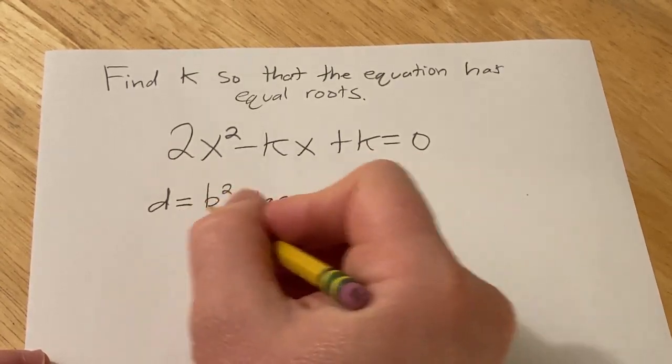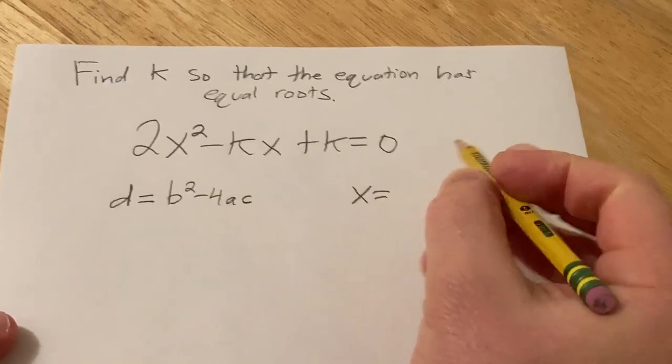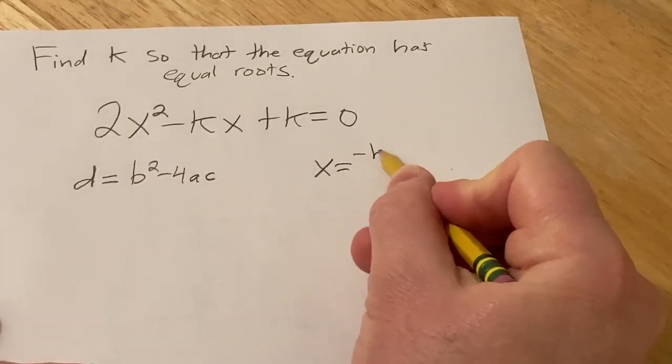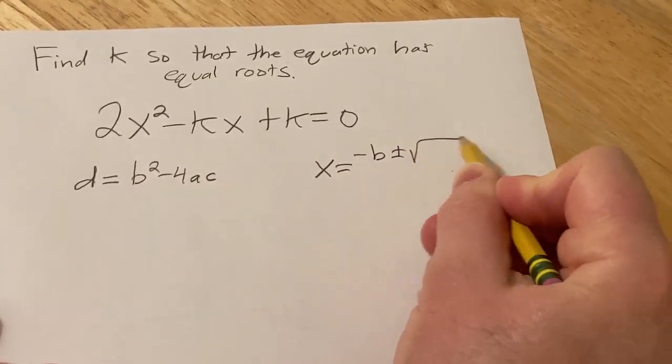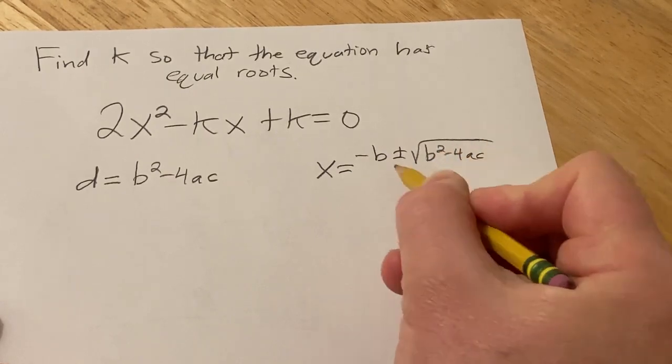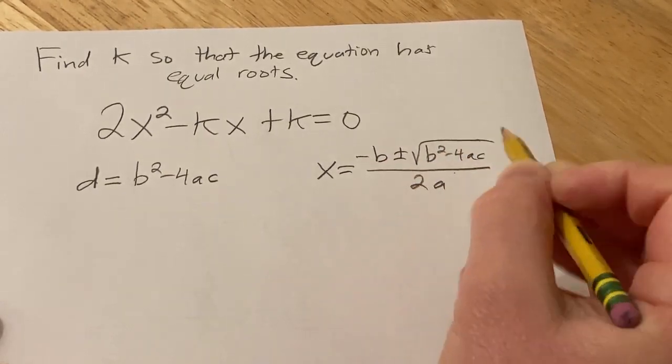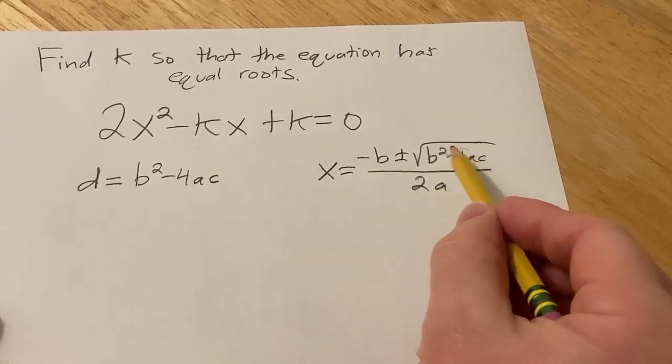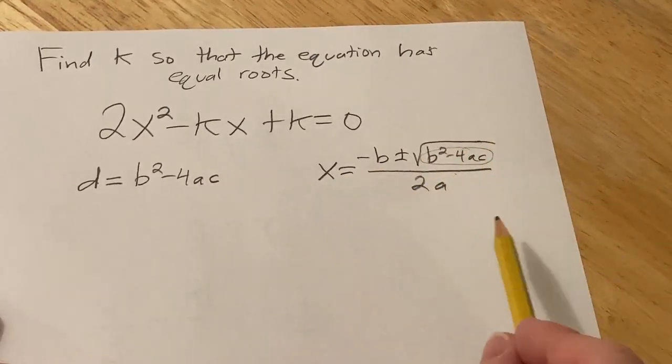And this comes from the quadratic formula. Recall the quadratic formula is x = (-b ± √(b² - 4ac)) / 2a. And so this part inside the square root is called the discriminant.